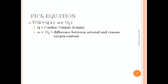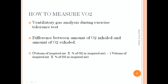Now we also need to understand the Fick equation. VO2 is equivalent to the product of the cardiac output and the difference between the arterial and venous oxygen content. So this is the formula for calculating VO2. Even if we can measure VO2 with the help of the Fick equation, it is very difficult to do it practically.